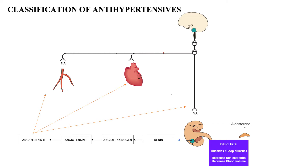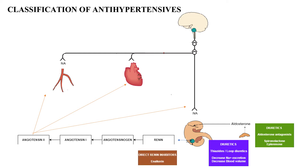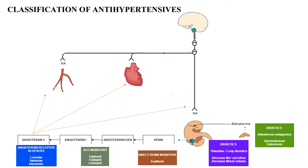The first-line drugs are diuretics — thiazides and loop diuretics — which decrease sodium excretion and decrease blood volume, acting as antihypertensives. Potassium-sparing diuretics or aldosterone antagonists such as spironolactone and eplerenone are weak diuretics. Renin inhibitors include aliskiren and remikiren. ACE inhibitors include captopril, enalapril, and all the 'prils'. Angiotensin receptor blockers include losartan, valsartan, irbesartan, and all the 'sartans'.